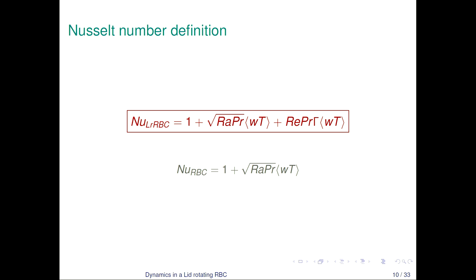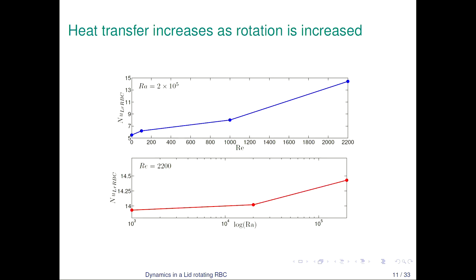The main quantity of interest in such a flow is how heat is transferred, quantified by the Nusselt number. Since we use a different scaling, our Nusselt number is modified as the LRRBC Nusselt number — that is the lid-rotating RBC Nusselt number — which includes the usual Nusselt number definition for RBC as well as a forced convection part. If you put Reynolds number equals zero, you obtain the Nusselt number definition for a standard Rayleigh-Bénard convection system.